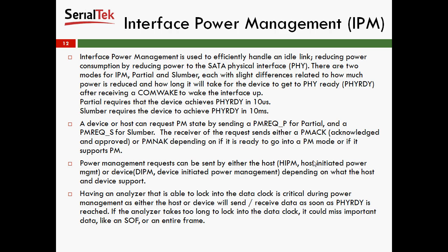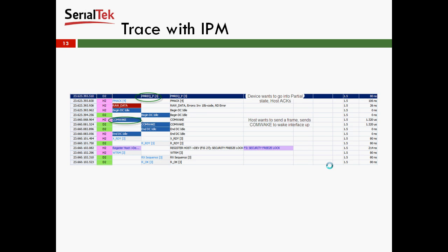It's very important to have a protocol analyzer that is able to lock into the data clock, as this is critical during power management. Either the host or device will send data as soon as PHY ready is reached, and if the analyzer takes too long to lock into the data clock, it could miss important data like an SOF, which would mean the analyzer misses the entire frame. Here's what a trace looks like with IPM. You'll see a PMREQ, a PM ACK, the lines go idle. Once the host is ready to send something to the device, it sends a COMWAKE to wake up the interface, the device responds, the host sends an X-Ready, and then we'll have a frame transmission.